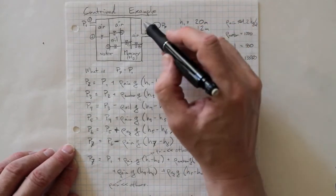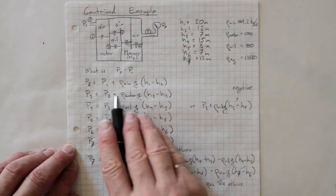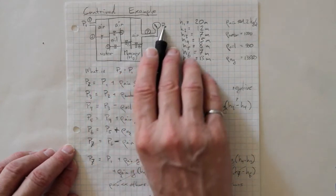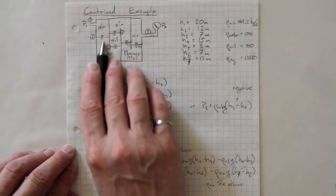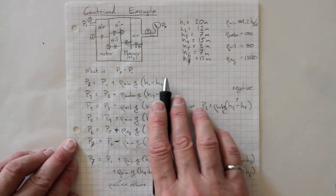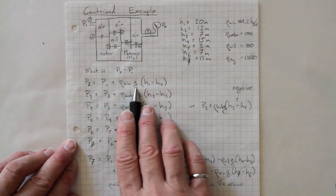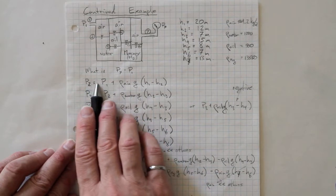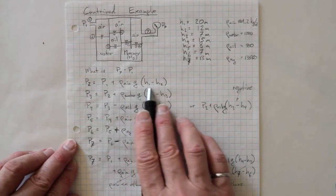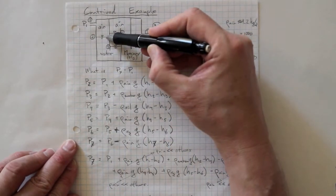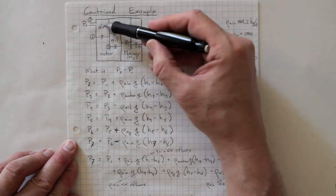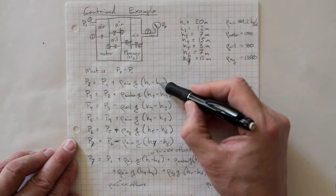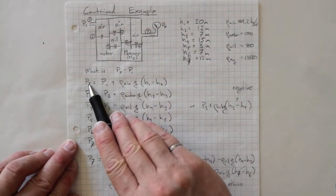We'd like to know what p7 is, and we can only find p7 relative to p1 — so we find the difference between p7 and p1. Looking at it off hand, it's not clear whether p7 will be larger than p1, but if we walk through the loop we'll find out. We get p2 equal to p1 plus rho_air times g times (h1 minus h2). That's just delta p = rho·g·delta h. P2 is at a lower elevation than p1, so the pressure at two should be higher. H1 is bigger than h2, so this gives us p2 bigger than p1.